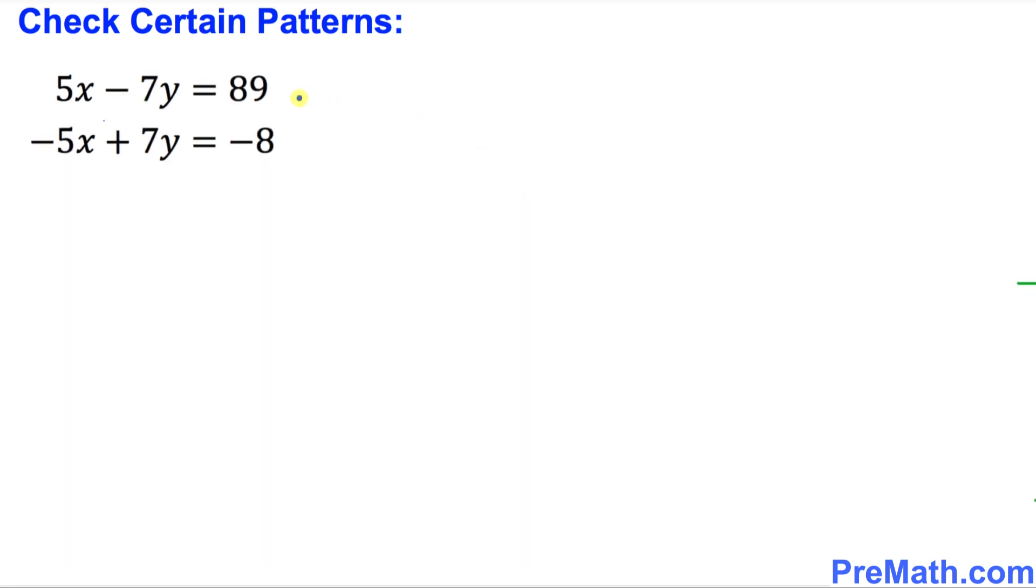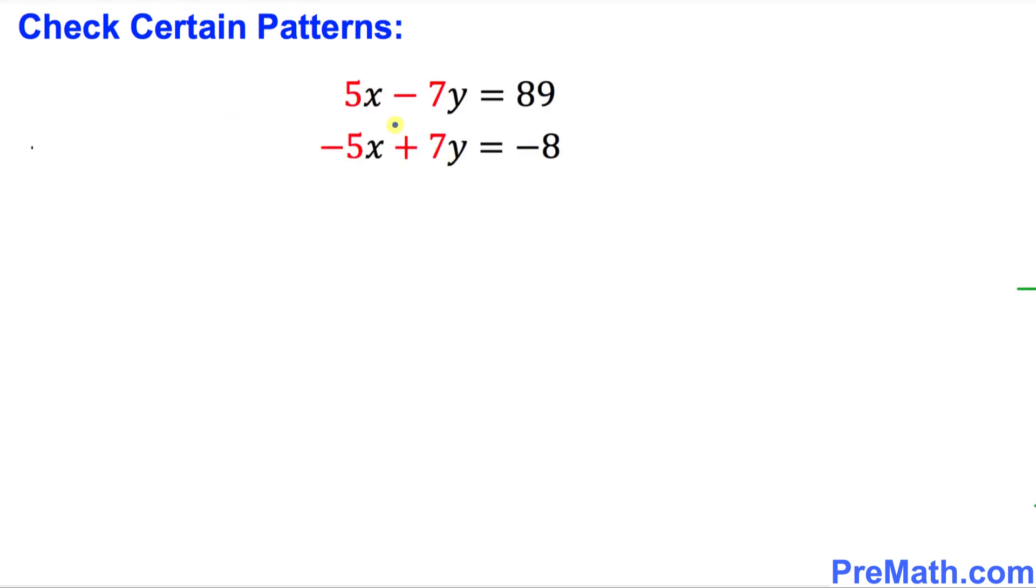And here is our next example, a system of equations. And once again we are going to spot a certain pattern. This time I have highlighted these numbers in red, and both are the coefficients of x. As you can see, coefficient of x and coefficient of y. If we cross multiply these, let's cross multiply this way.